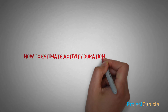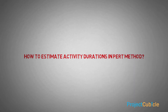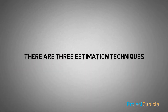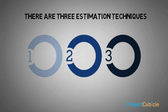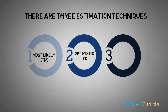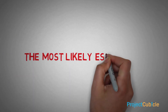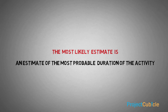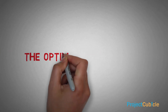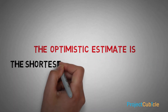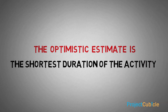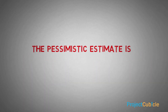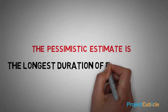How to estimate activity durations in the PERT method? There are three estimation techniques: most likely, optimistic, and pessimistic. The most likely estimate is an estimate of the most probable duration of the activity. The optimistic estimate is the shortest duration of the activity. The pessimistic estimate is the longest duration of the activity.